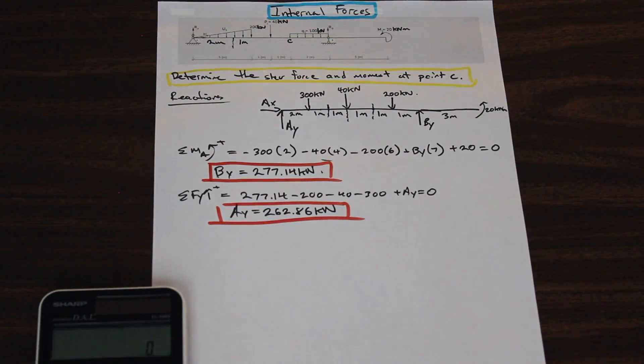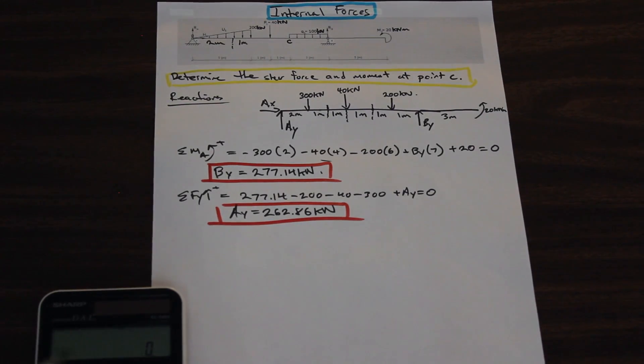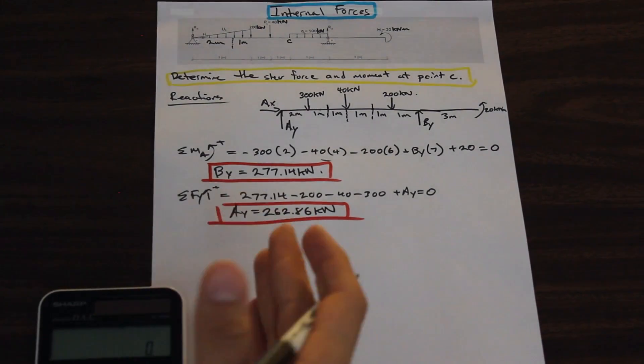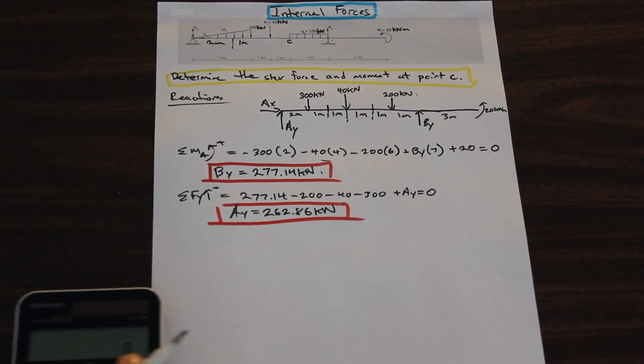So now that we've found the reactions, let's figure out what the question is asking us. It's asking us to find the shear force and moment at point C. So whenever we want the exact numbers of the shear force and the moment at a point, the internal forces, we need to cut the beam at that point. So let's cut the beam at C.